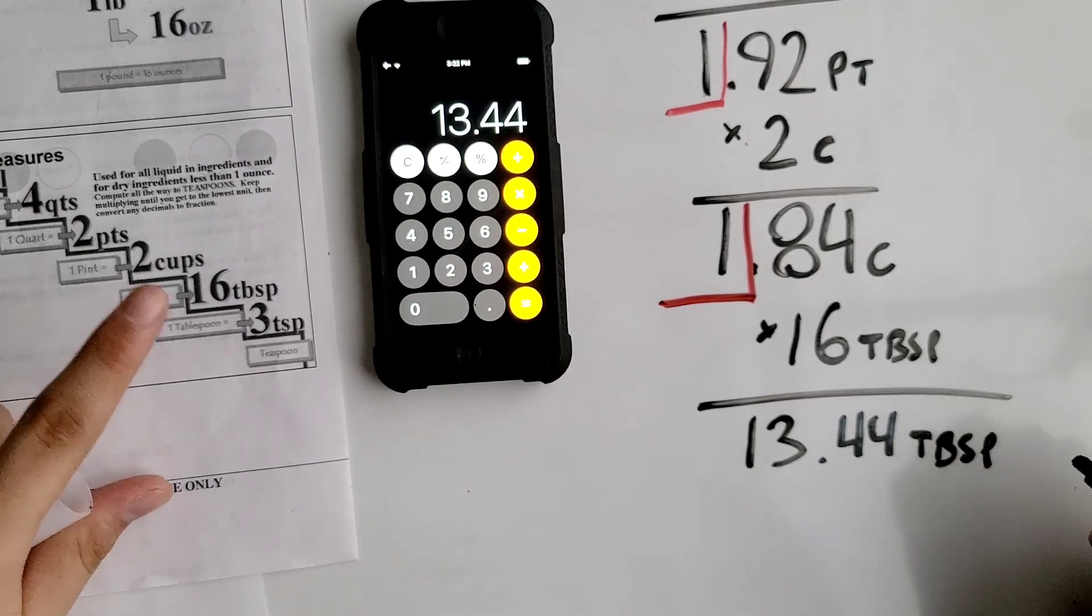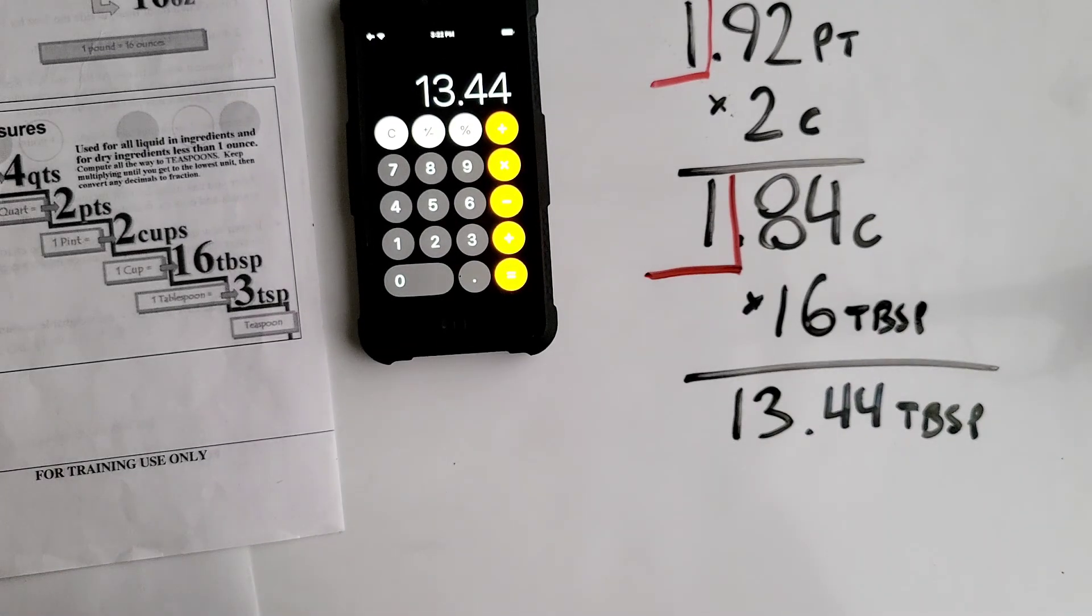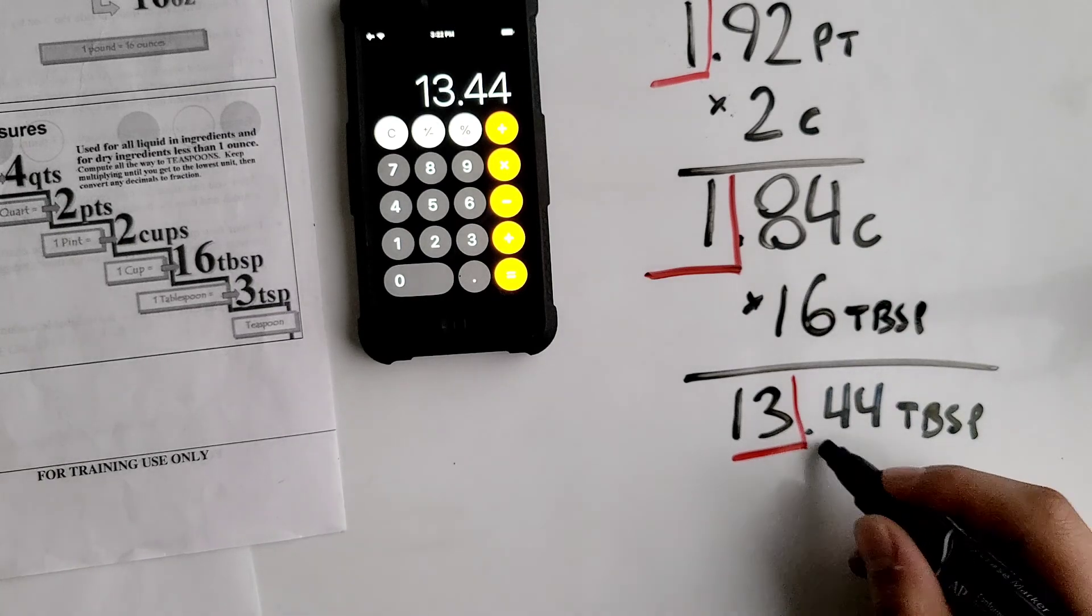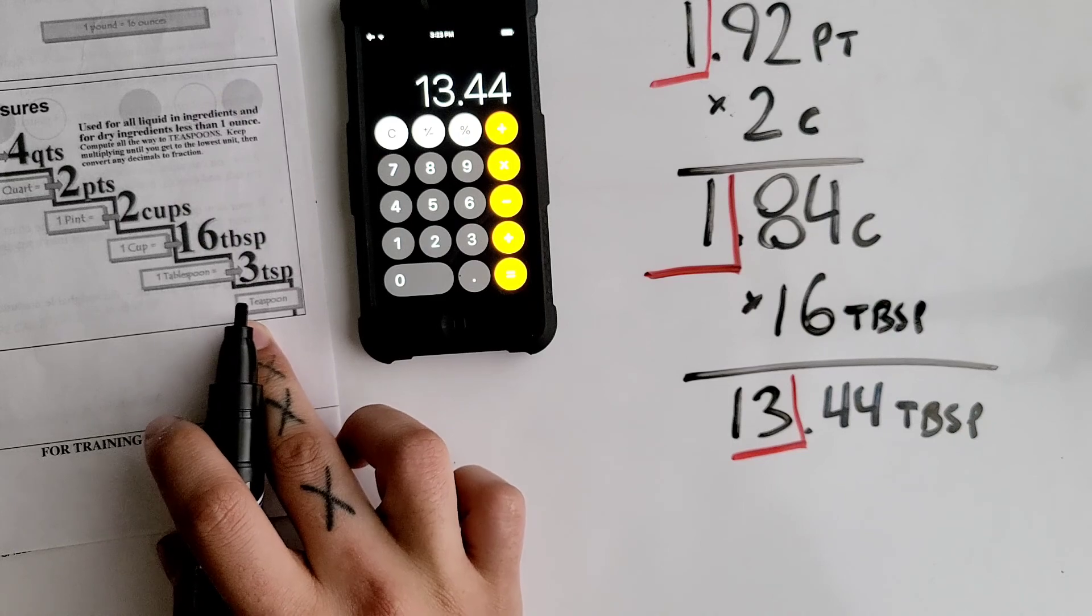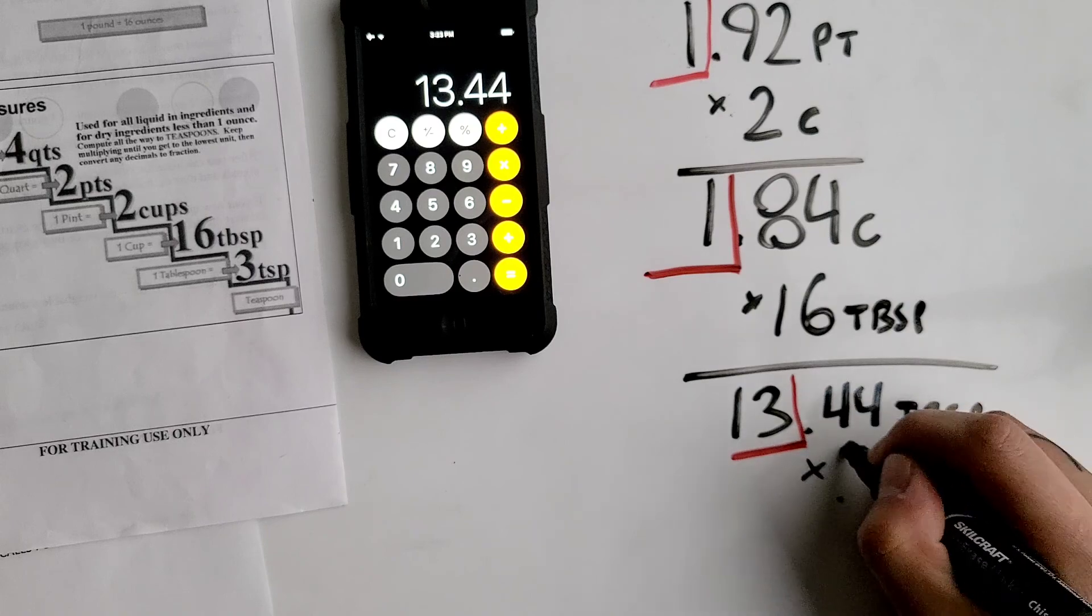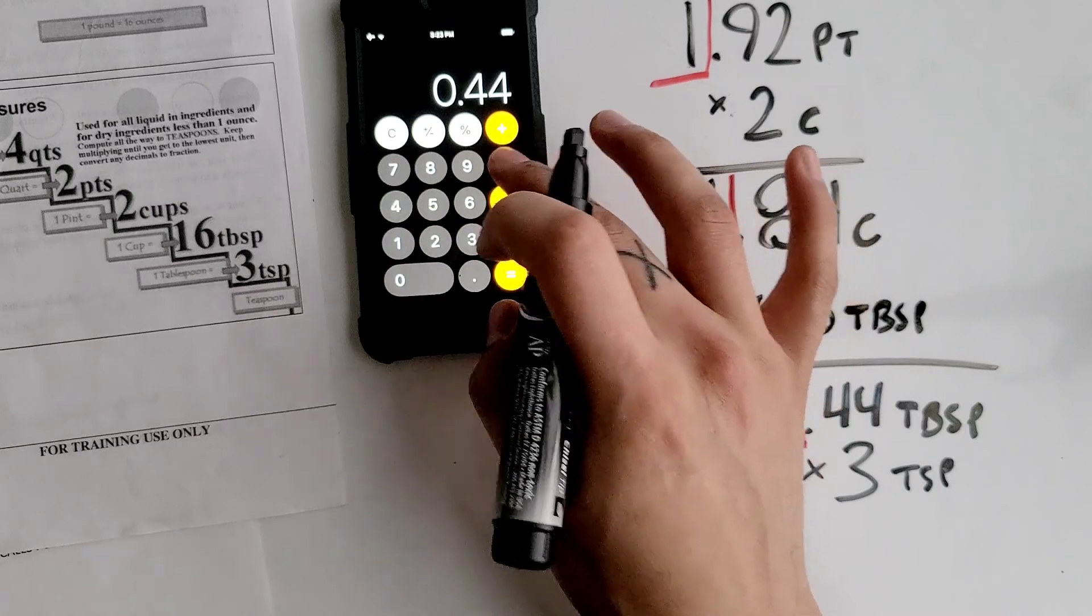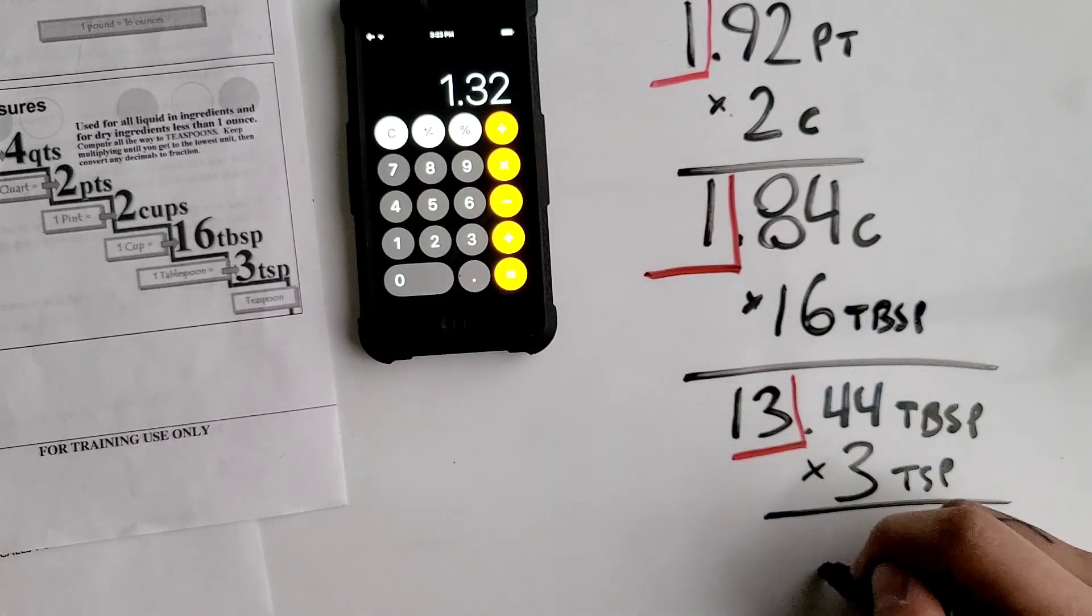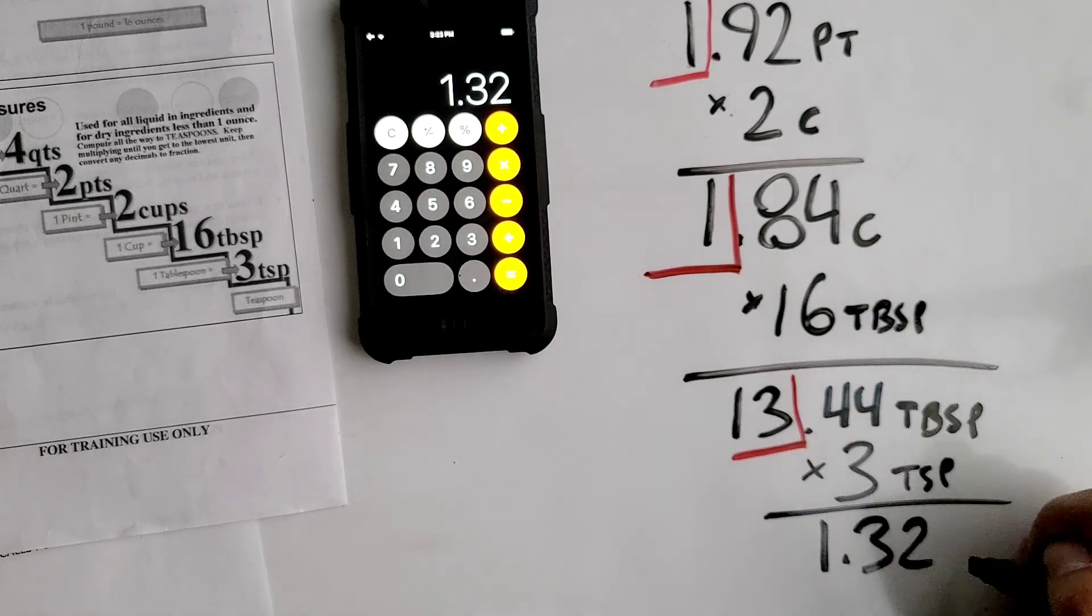We got one more step because we're almost at its lowest unit. Block off your whole number and multiply the remaining decimal with the unit under it, which in this case is your 3 teaspoons. So 0.44 times 3 teaspoons equals 1.32 teaspoons.